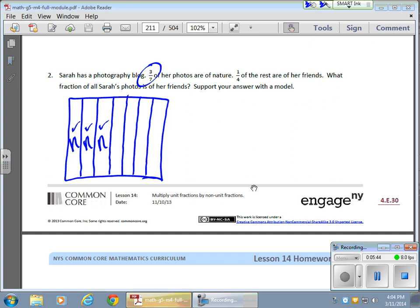Now one quarter of the rest are of her friends. Of the rest. Now this area here is what's left. This guy right here. Okay, this is what's left. One quarter of that is for her friends. Now fortunately, I have four parts already. So I need one of these pieces. This guy right here. I'm going to put an F. Those are photos of her friends.